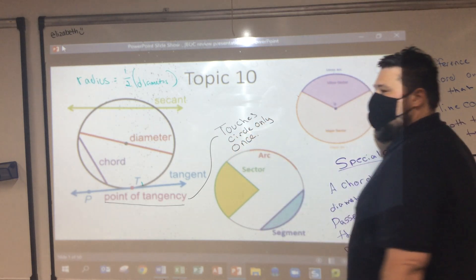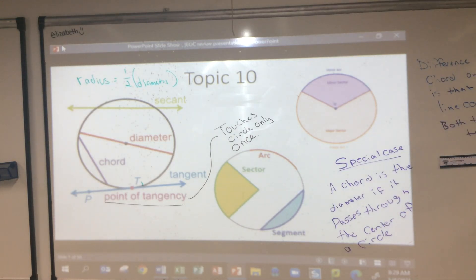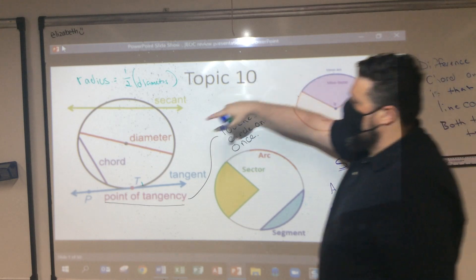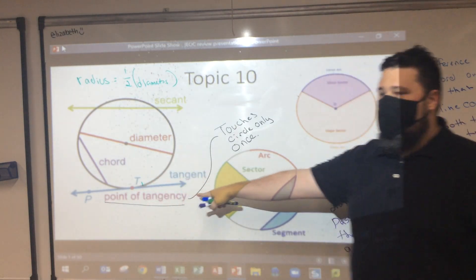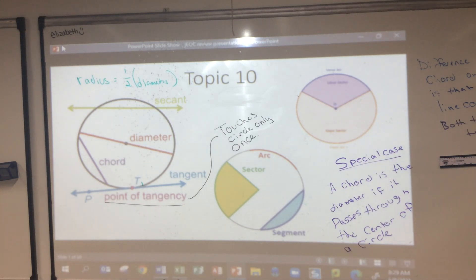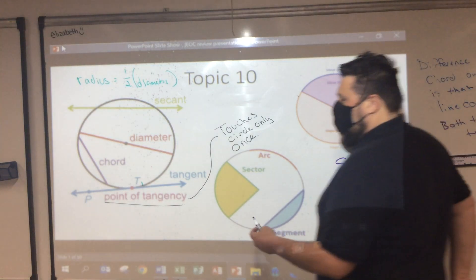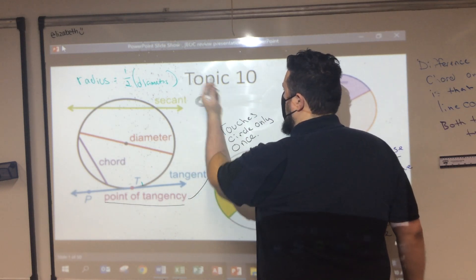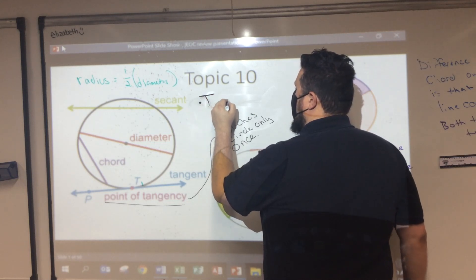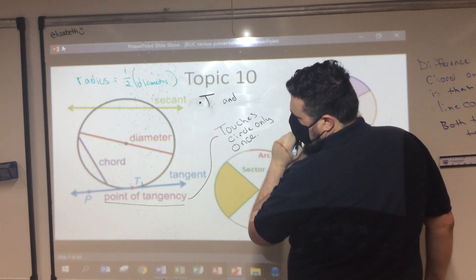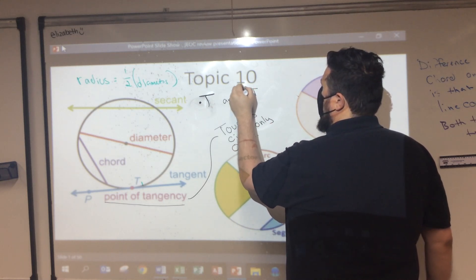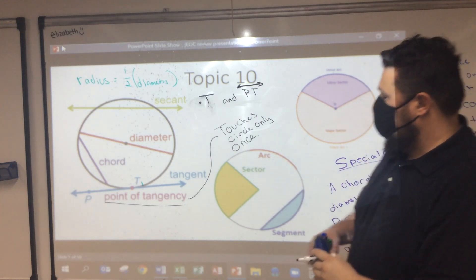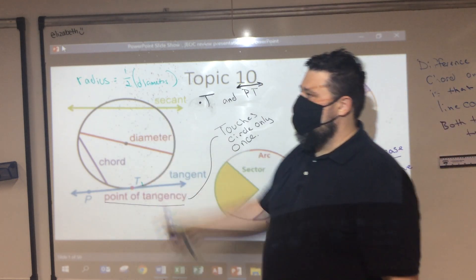This touches the circle only once. So a secant line pushed to the extreme, all the way to the edge, becomes a tangent line — only when it touches the circle once. If it touches twice, it's just a secant line; we don't have much more to say.